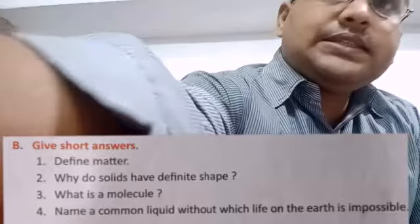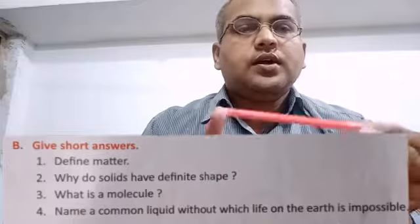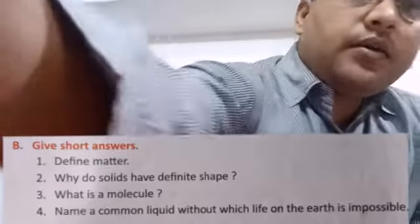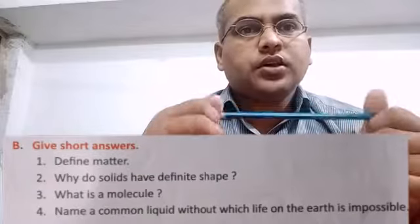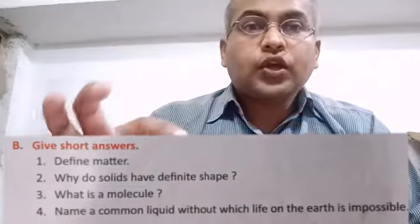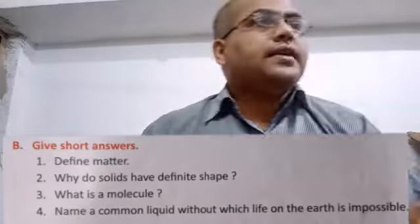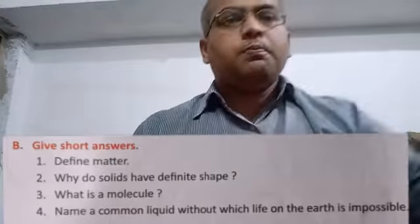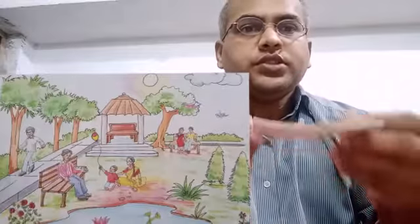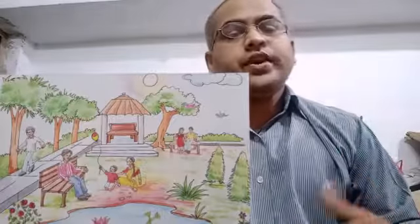This pen is also matter because it has some space and mass. This pencil is also a piece of matter because it has some mass and occupies some space. This small pad is also matter because it occupies some space and has some mass. So anything that occupies some space and has some mass is called matter.